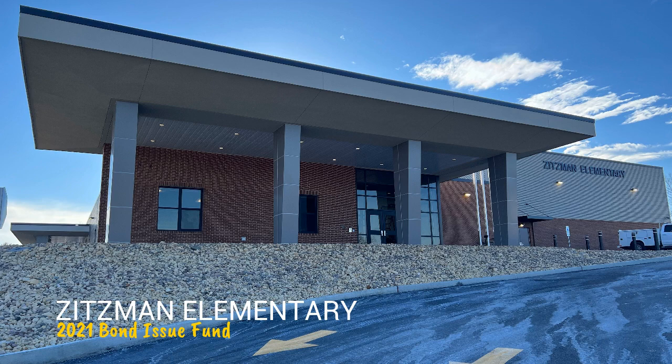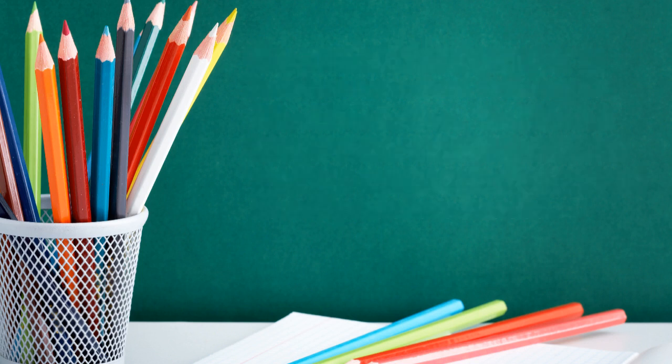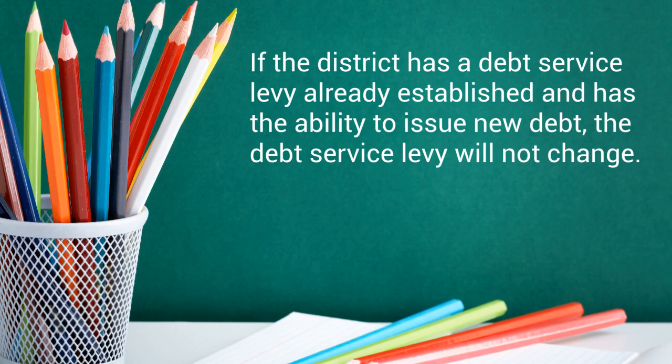So how does a bond issue work? Say a school district wants to build a new building for $10 million. The district will go to voters and ask them to approve the issuance of $10 million in debt. If the district has a debt service levy already established and has the ability to issue new debt, that debt service levy will not change.